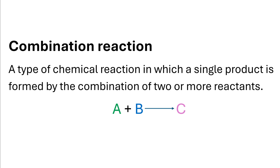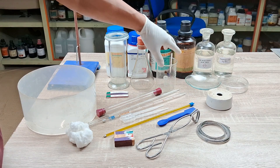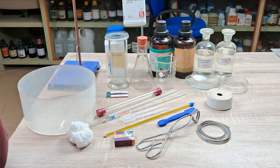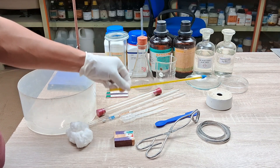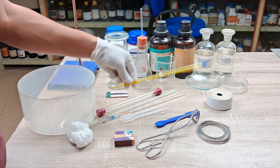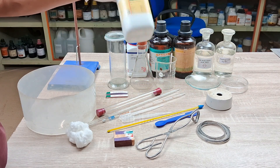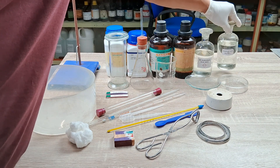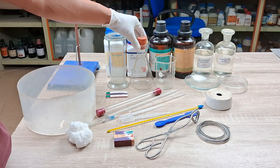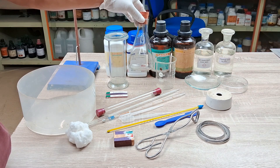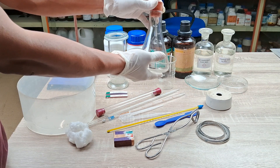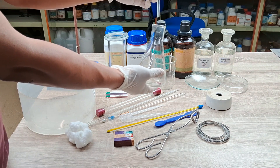To perform some experiments in combination reaction, we'll be needing the following: a 250 ml beaker, calcium oxide powder, a spatula, a laboratory thermometer, zinc granules, dilute sulfuric or dilute hydrochloric acid, and a 250 ml Erlenmeyer flask or a round bottom flask with a tight-fitting one-hole rubber cork and a straight delivery tube above 15 cm long.